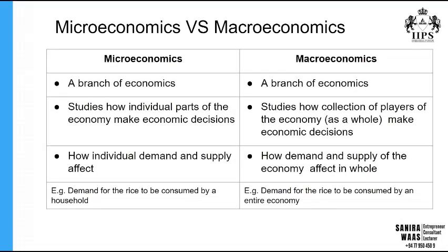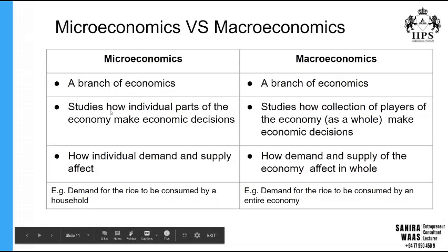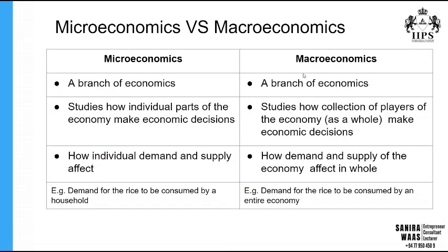Both are branches of economics. In microeconomics, we study how the individual parts of the economy make economic decisions, while in macroeconomics we study how the collection of players of the economy make economic decisions as a whole. These economic decisions focus on satisfying unlimited needs and wants.